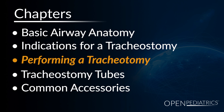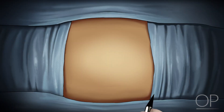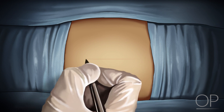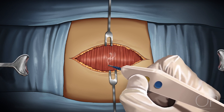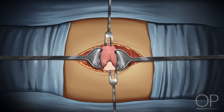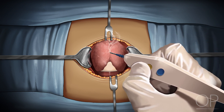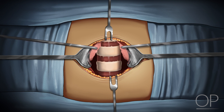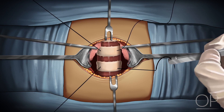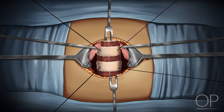Performing a tracheotomy. During the procedure itself, the layers of the neck are carefully identified and separated, creating a track down to the trachea. Prior to finding the trachea, the thyroid gland is usually encountered. The surgeon may choose to move the gland out of the way or divide the gland to expose the trachea. In a child, two stay sutures are usually placed through the second and third cartilaginous rings on either side of the trachea where the tracheostomy incision will be made.